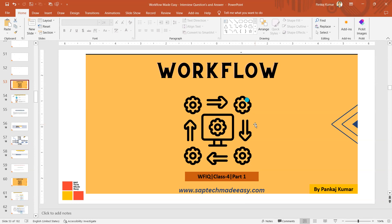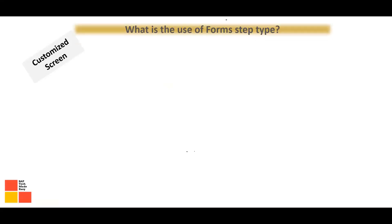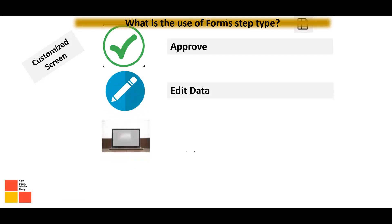Welcome to Workflow Class 4 Part 1. The very first question of this workflow interview question-answer series is: what is the use of the Form A step type? The Form A step type is mainly used for creating customized screens, for example for approval, editing data, or displaying data.